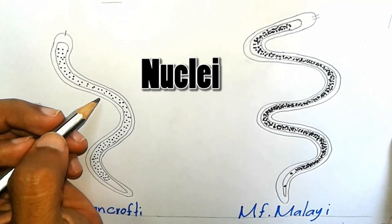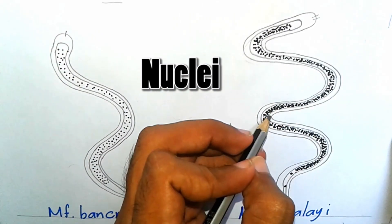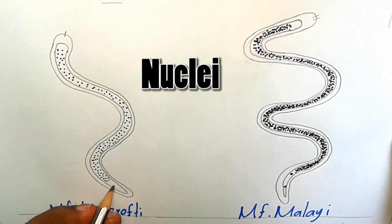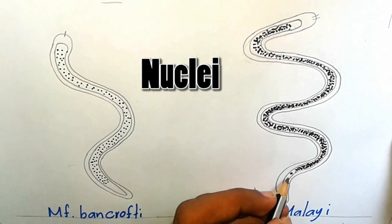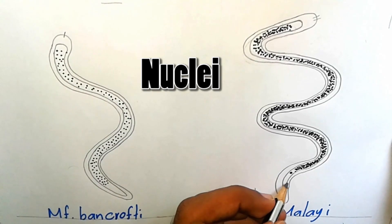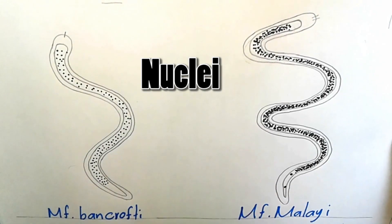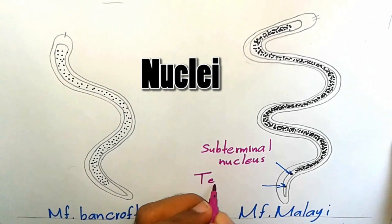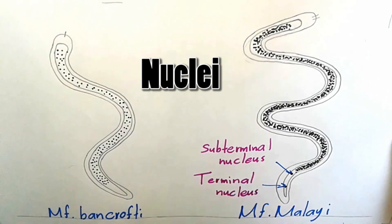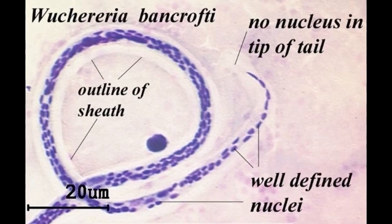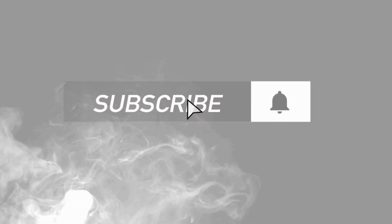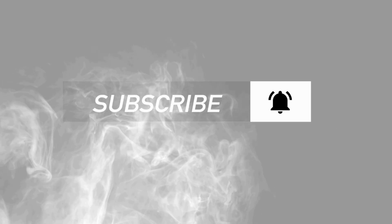In Wuchereria bancrofti, nuclei are countable. In Brugia malayi, nuclei are uncountable. There are no nuclei in the tail tip of Wuchereria bancrofti. In Brugia malayi, there are 2 widely spaced nuclei at the tail tip, with a sub-terminal nucleus and a terminal nucleus.